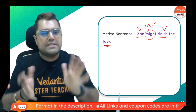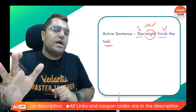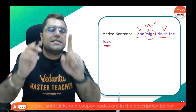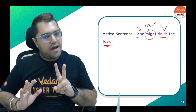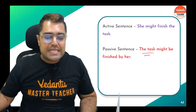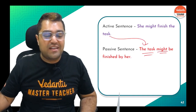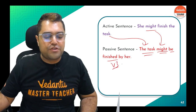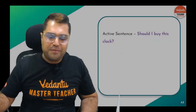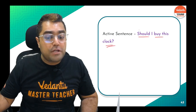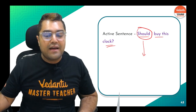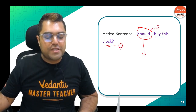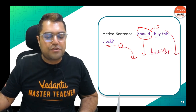Answer: 'The task might be finished by her.' Next interrogative: 'Should I buy this clock?' Modal stays first, object becomes subject, 'be + V3 + by': remember — object here, subject at the end, 'be + V3 + by.' Pause the video, write it, then unpause and check the answer.